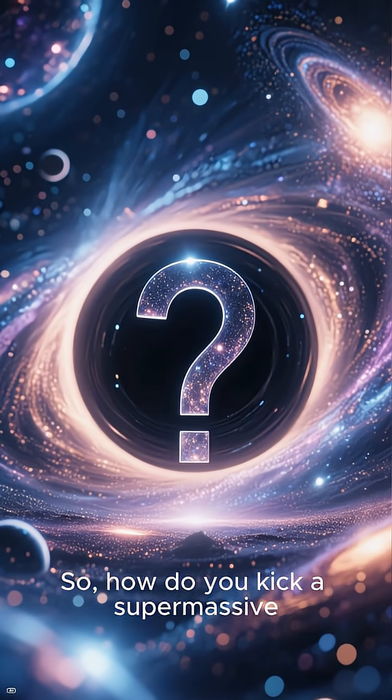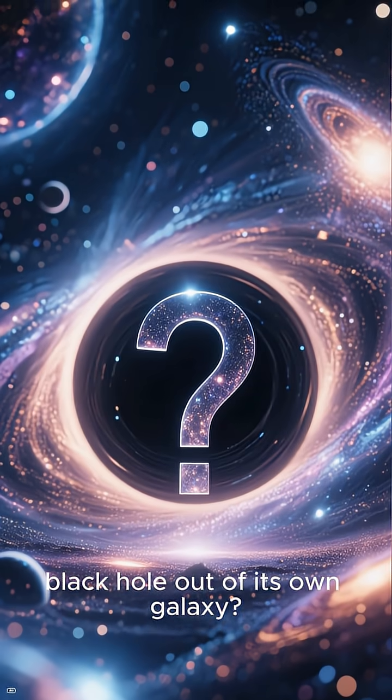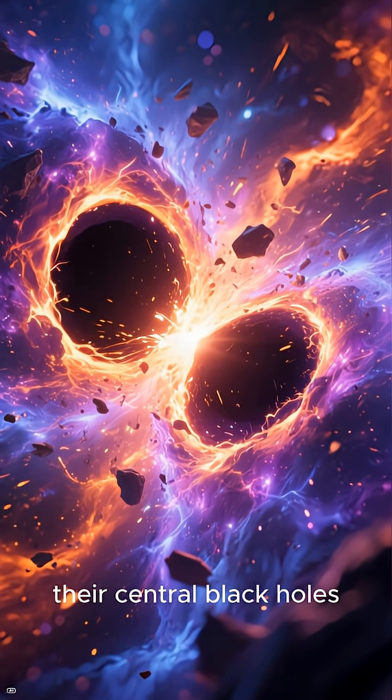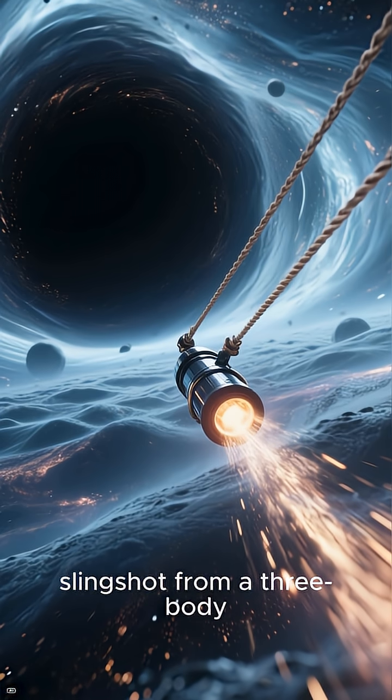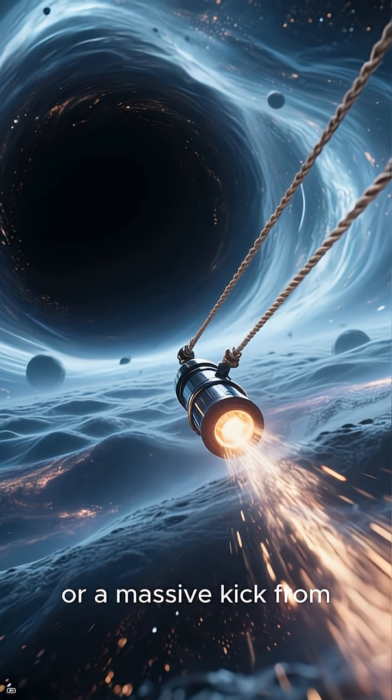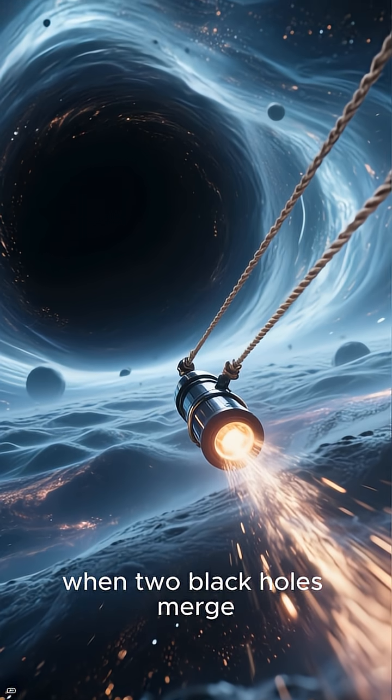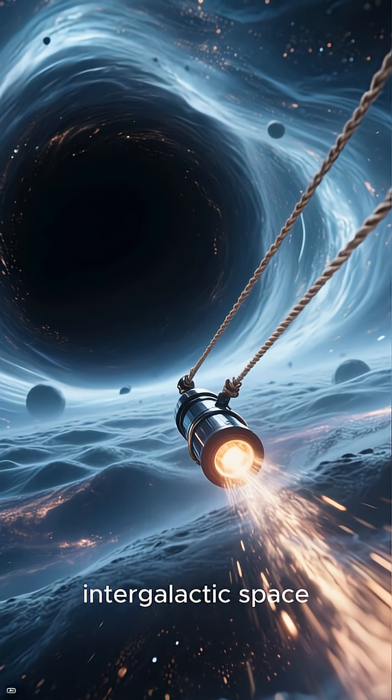How do you kick a supermassive black hole out of its own galaxy? The answer is galactic collisions. When galaxies merge, their central black holes can have a chaotic dance. A gravitational slingshot from a three-body interaction, or a massive kick from gravitational waves when two black holes merge, can send one flying into intergalactic space.